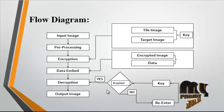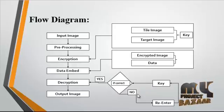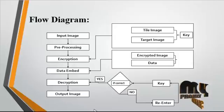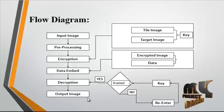Then the image undergoes decryption, which is the reversible process of encryption. The user provides the key for the decryption. If the key is correct, decryption occurs; if not, the user can re-enter the key. After decryption, the decrypted image consists of the two original input images as well as the embedded data, which is also retrieved through the decryption process.